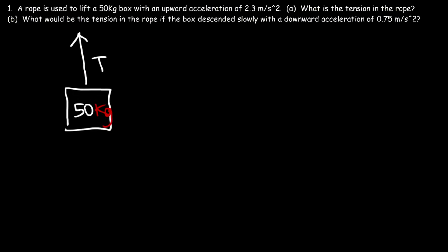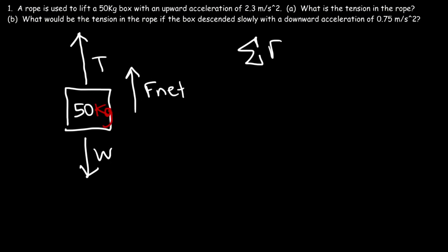We need to set up a free body diagram and identify all of the forces that are in play. We have the upward tension force, the downward weight force, and also the net force. The net force is in the upward direction because the whole object is being lifted up. So the net force in the y direction is going to be the tension minus the weight force — T minus W.